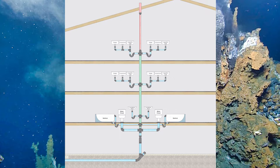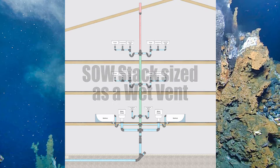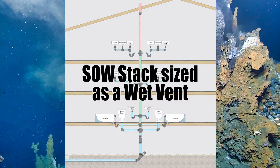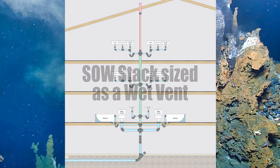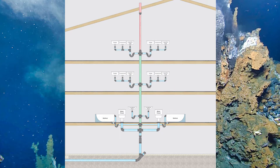We have two clauses left to cover in the wet venting section, and it covers a wet vent that passes through multiple stories. Now technically it's not called a wet vent — it's called a soil away stack sized as a wet vent. This picture is an example of when we might see something like this. I have two bathroom groups downstairs, and as we travel up the soil away stack you'll notice we have two three-compartment sinks draining into each story. This is a multi-story wet vent.